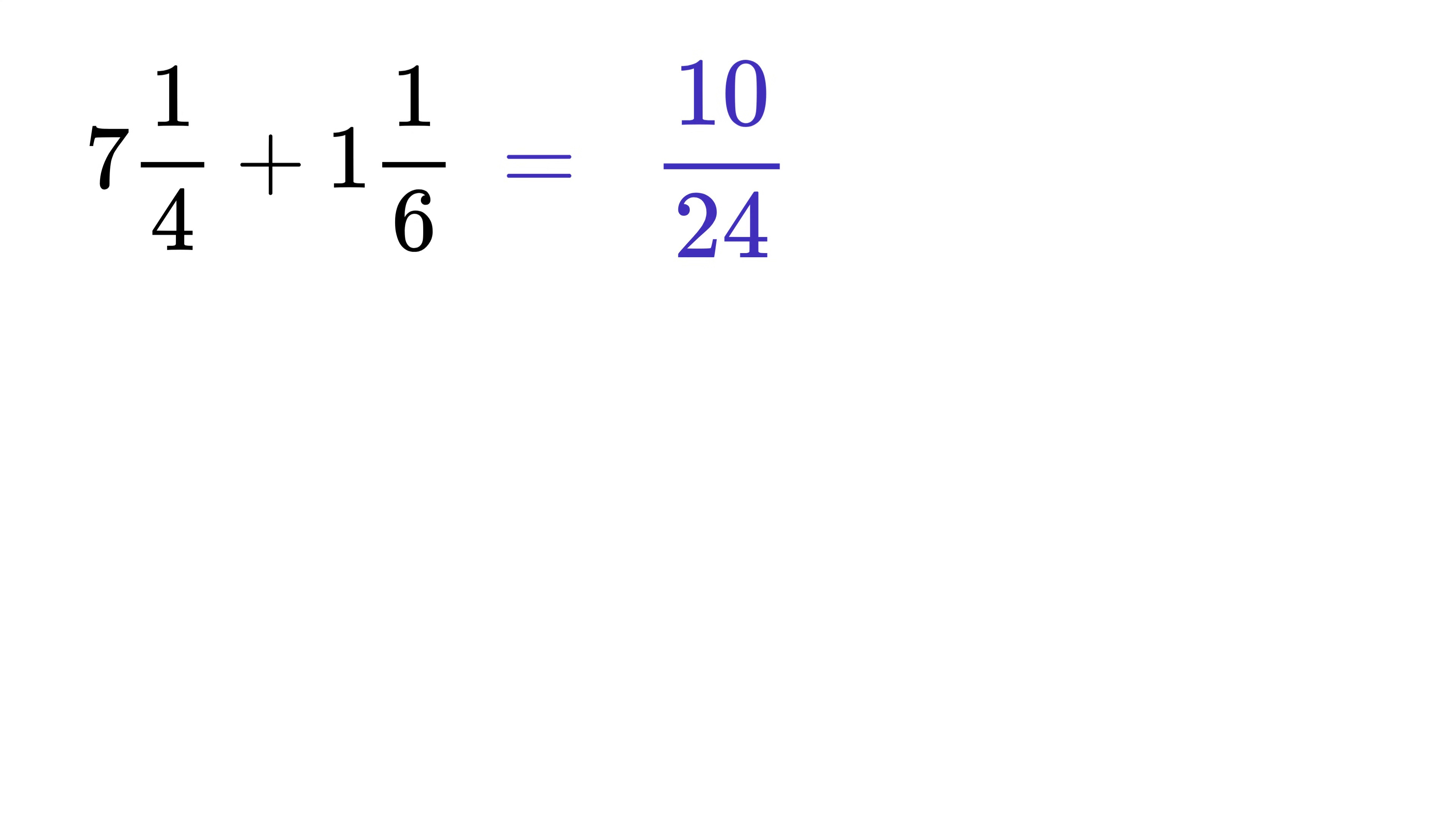We have 10/24 as a fraction, and we can reduce it by dividing both the numerator and the denominator by 2. After simplifying, this gives us 5/12 as the final fractional part. Then add these two whole numbers to get 7 plus 1 equals 8. So the answer is 8 5/12.